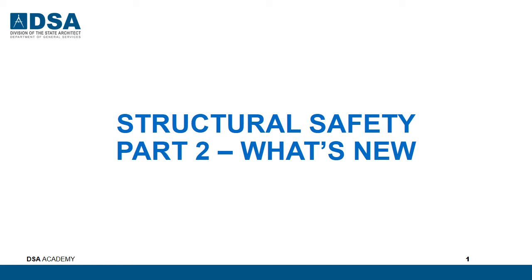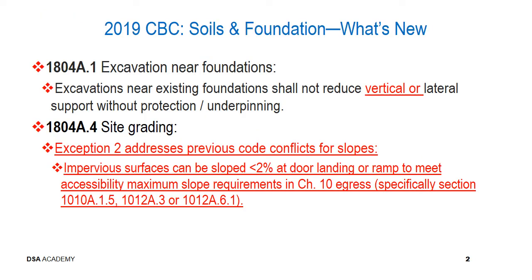We'll now continue with the structural safety presentation, going into part two with what's new and further details compared to the overview provided previously. In 1804A regarding excavation near foundations, there's been a clarification that excavations occurring near existing foundations shall not reduce the vertical or lateral support without protection or underpinning. This was likely being done on projects; there's now just an explicit code requirement. It was there previously for lateral loads.